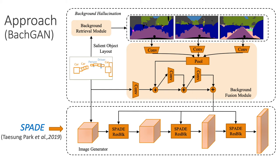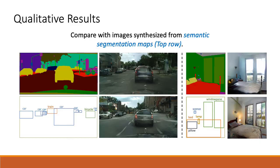We first select a set of segmentation maps from a large candidate pool via a background retrieval module, then encode these candidate layouts via a background fusion module to hallucinate a suitable background for the given objects. Our model can synthesize high-resolution images with both photorealistic foreground and integral background.